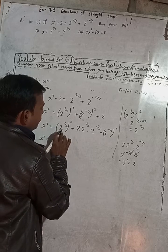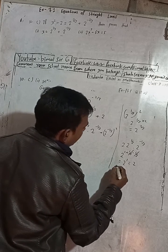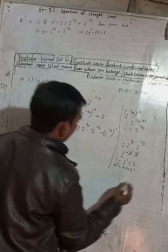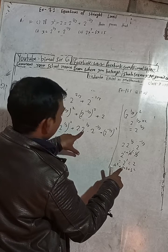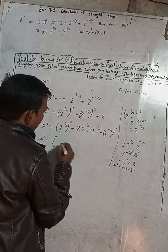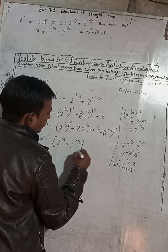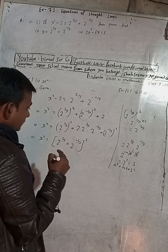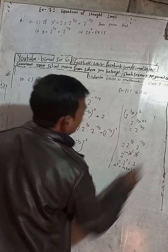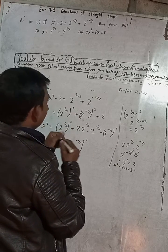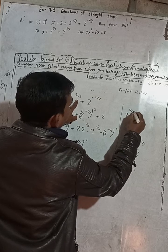Now x squared is equal to this — it is the same as the formula a squared plus 2ab plus b squared. In place of a there is 2 to the power 1 by 3, this 2 is the middle term 2ab, and b is 2 to the power minus 1 by 3. So you can write this as: 2 to the power 1 by 3 plus 2 to the power minus 1 by 3, the whole squared.